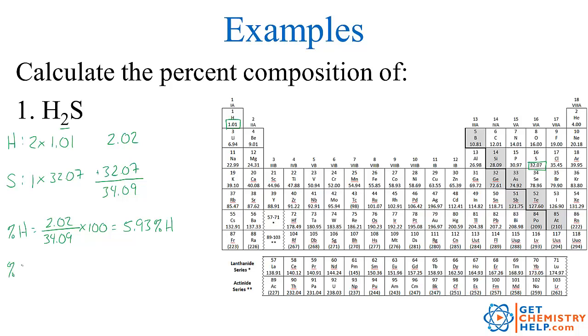How about the percent of sulfur? The total mass of sulfur, there was only one, so it's 32.07, divided by the total mass of the compound, again, was 34.09. So we take that times 100. This is 4 sig figs over 4 sig figs this time, so 94.07% sulfur.